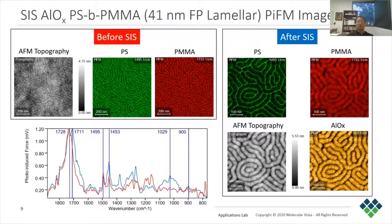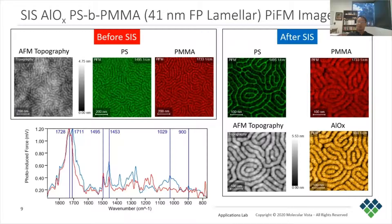In this slide, we show that PIFM works equally well with organic and inorganic molecules. We are looking at a PS-PMMA block copolymer that has undergone a process called selective infiltration synthesis (SIS). In this case, the PS-PMMA block copolymer is exposed to a vapor of trimethyl aluminum (TMA), which gets incorporated selectively into the PMMA block. TMA is then converted to aluminum oxide by subsequent exposure to water vapor.